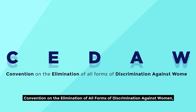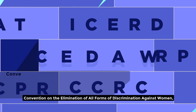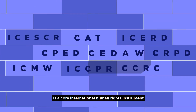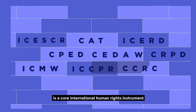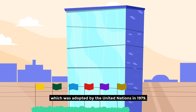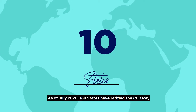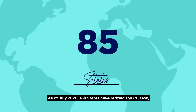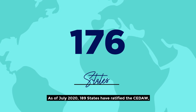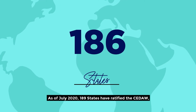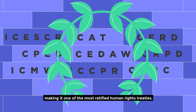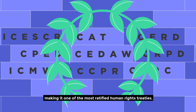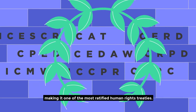CEDAW, the Convention on the Elimination of All Forms of Discrimination Against Women, is a core international human rights instrument which was adopted by the United Nations in 1979. As of July 2020, 189 states have ratified the CEDAW, making it one of the most ratified human rights treaties.